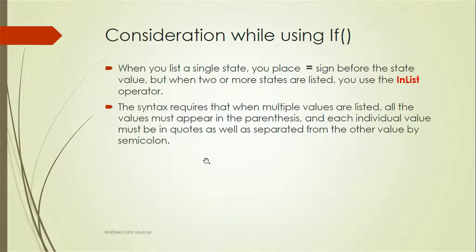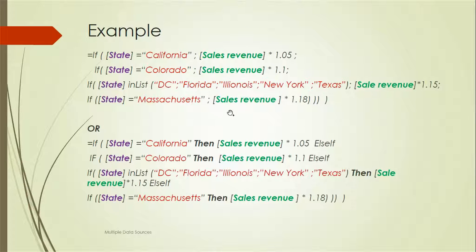What are the considerations while using If? First, when you list a single state, you place an equals sign. Whenever we have one single value to check, we use equals. When there are multiple values, we use the 'in list' operator. The syntax requires that when multiple values are listed, all values must appear in parentheses. So whenever we're using 'in list', we should use parentheses with values separated by semicolons. If it's a single value, we use the equals operator.